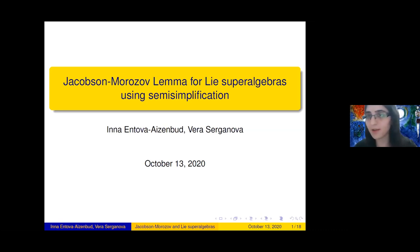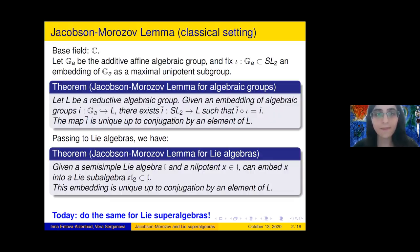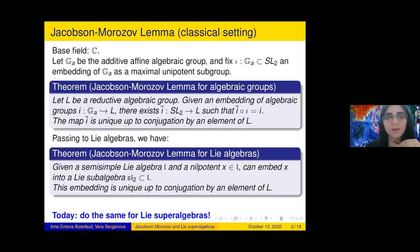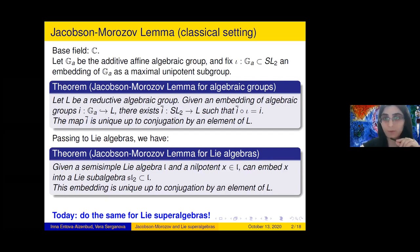Please feel free to ask questions during the talk. Let me first remind you what is the Jacobson-Morozov lemma in the classical setting. We'll work over the base field of complex numbers. The first main player will be the additive unipotent algebraic group, which we'll denote by G_A.